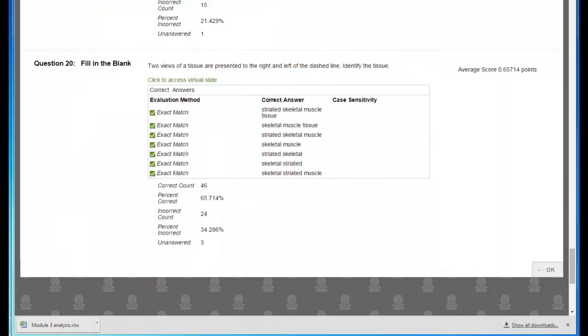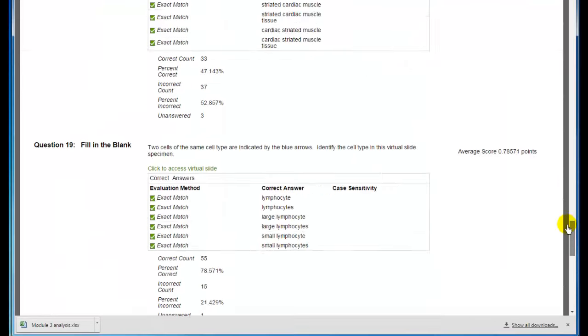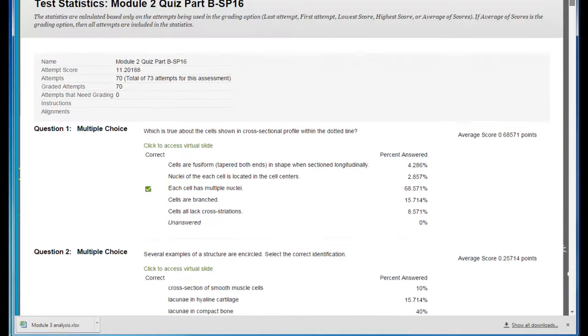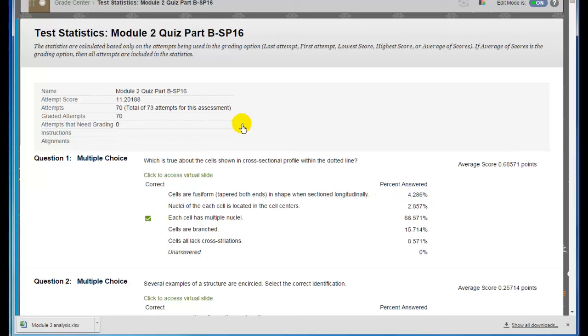So that concludes the review of the 20 questions, the most missed questions in Part B of Module 2 Quiz.